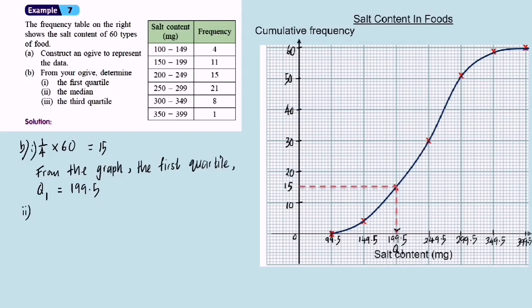Now we try to find the median. 1 over 2 of the total frequency equals 30. From 30, you draw a dash line to the ogive. Until you touch the ogive, then turn to the horizontal axis and find the value of the median. So the value of the median is 249.5.